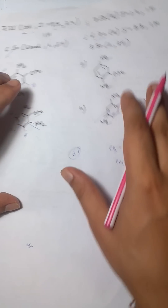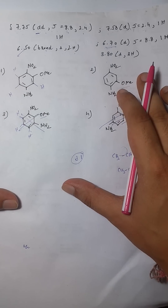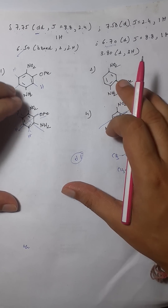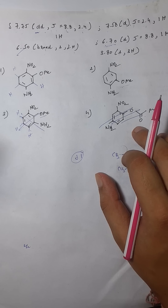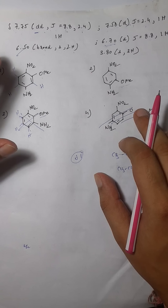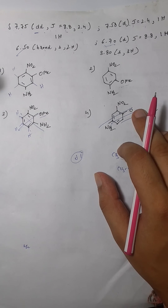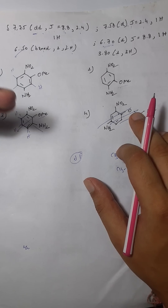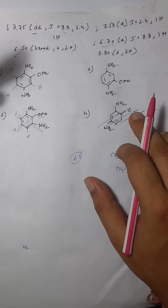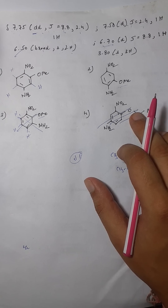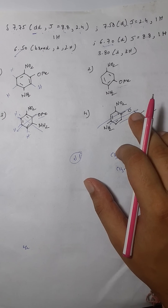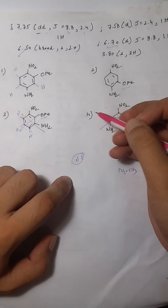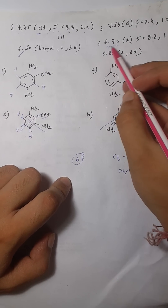Now we're only left with two options, so we can spend more time deciding which of the two is the answer. This elimination method takes about 20–25 seconds, leaving at least one to one-and-a-half minutes for the rest. I picked this particular question because it's a little tricky and covers most of the good concepts.